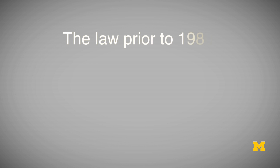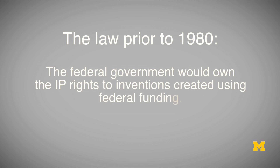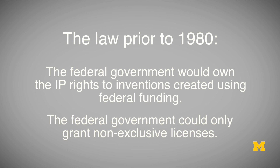But technology transfer didn't always work this way, and it didn't always work this well. Prior to 1980, the law was that the federal government would own the intellectual property rights in inventions created using federal funding. The federal government could not grant exclusive licenses — they could only grant non-exclusive licenses.